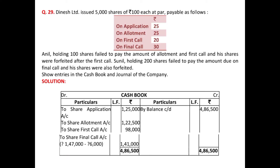Moving to the next question: Dinesh Limited issued 5,000 shares of rupees 100 each at par, payable as follows — on application 25, on allotment 25, on first call 20, on final call 30. Anil, holding 100 shares, failed to pay the amount of allotment and first call — that is 45 rupees on 100 shares was not paid — and his shares were forfeited after the first call.